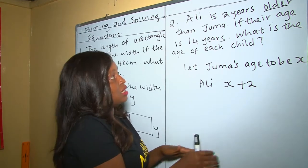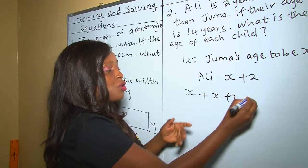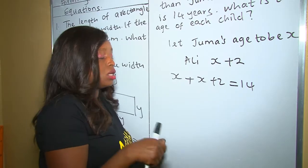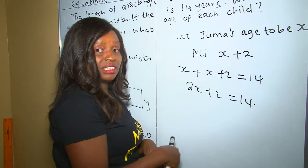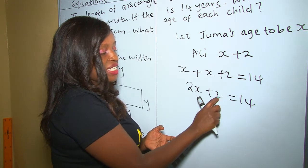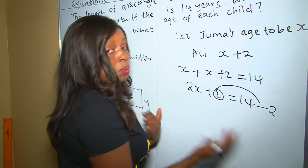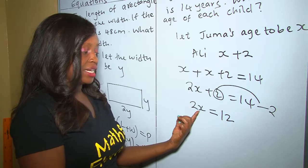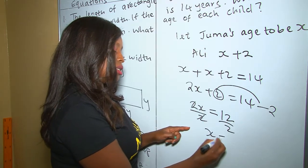The age of Juma, which is x, added to the age of Ali, which is x + 2, should give us a total of 14 years. Bringing like terms together: x + x is 2x, plus 2 equals 14. Since 2 is a number, it crosses to the other side and becomes subtraction: 2x = 14 − 2 = 12. We divide both sides by 2, and x = 6.